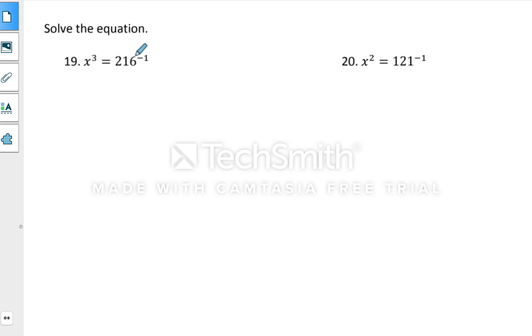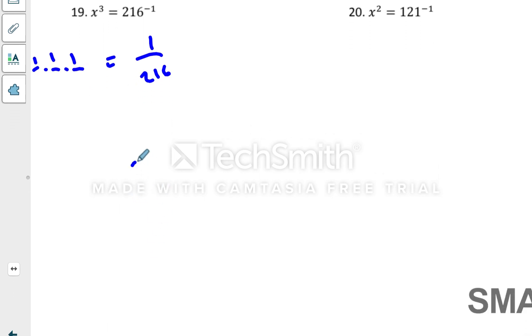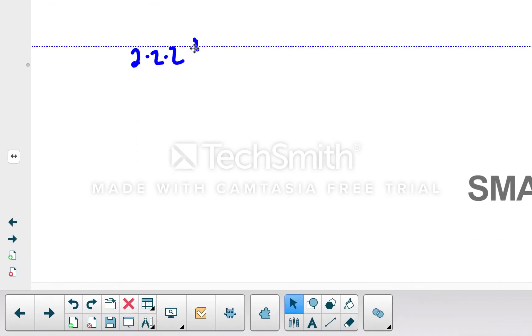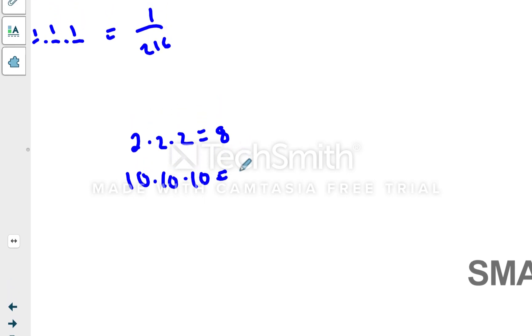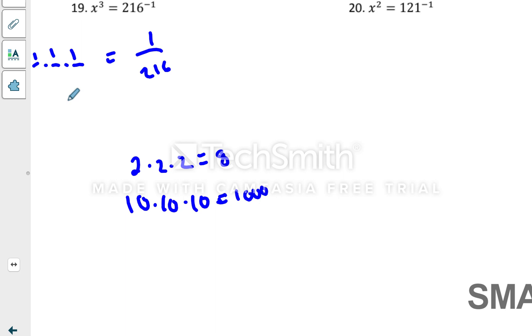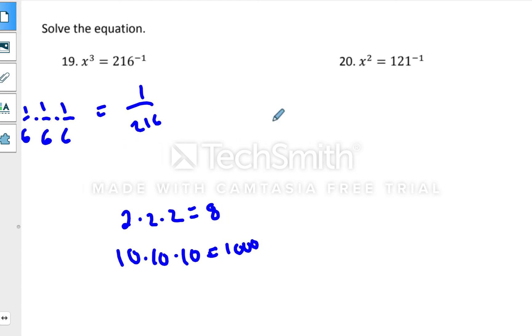x cubed is the same as 216 to the negative 1. Negative exponents make fractions, so I'm going to rewrite that. This is a fraction. Something times something times something equals 1 over 216. That's going to be 1 times 1 times 1. And then the 216, you can do some guess and check. I know 2 times 2 times 2 is 8. 2 is too small. 10 is too big. See if you can figure this out on your own, pause the video. See if you can get what equals 216. Hopefully, you ended up with 6 over here. So it would be 1/6 times 1/6 times 1/6 equals 1 over 216.